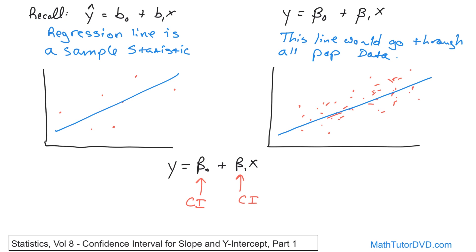If there's one takeaway from this: you have sample data and a regression line with known coefficients calculated from that sample. There exists a population with millions or billions of people — you could never know all that information — but there is a regression line that goes through it, with beta-naught as its y-intercept and beta-1 as its slope, even though we'll never know those values. So we start with b0 and b1 as point estimates, add and subtract a margin of error, and arrive at confidence intervals for beta-naught and beta-1. That will be calculated in the next lesson.